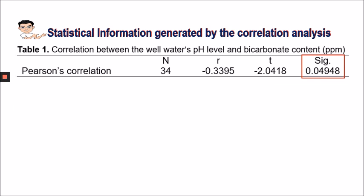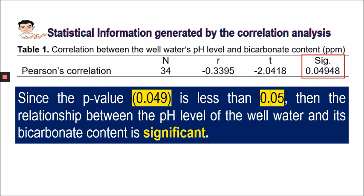In this case, the p-value is indeed less than 0.05, so we can say that there is a significant relationship between the pH level and the bicarbonate content of the well water.